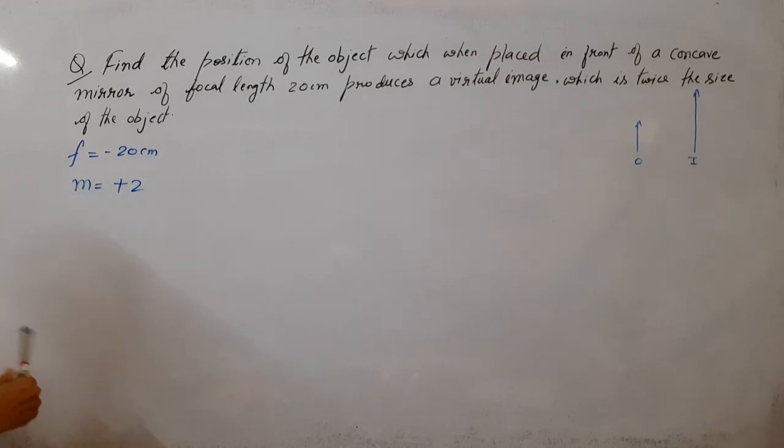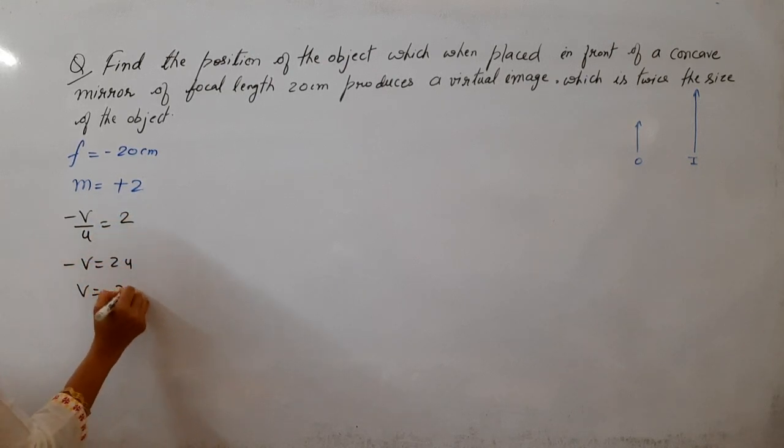Aga hum values dalti hai. Magnification ka formula hote hai, minus v upon u. That is 2. So, minus v equal to 2u. Ya, you can write v equal to minus 2u.